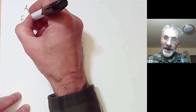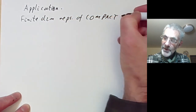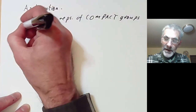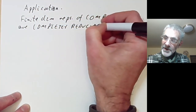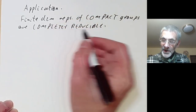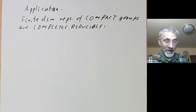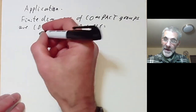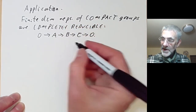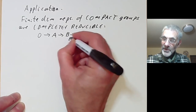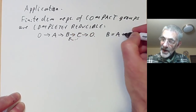Here's an example of an application of integration where you don't need to know the measure explicitly. The application is that finite dimensional representations of compact groups are completely reducible. Completely reducible means you can write them as sums of irreducible representations, meaning they don't have any sub-representations apart from 0 and the whole thing. So if you've got an exact sequence 0 → a → b → c → 0 of representations, then this splits, meaning there's a morphism from c to b which identifies b with a plus c.